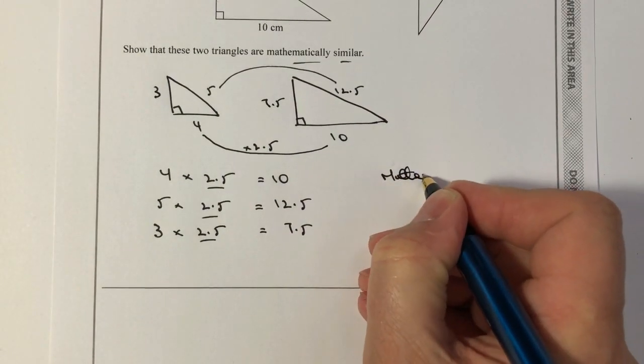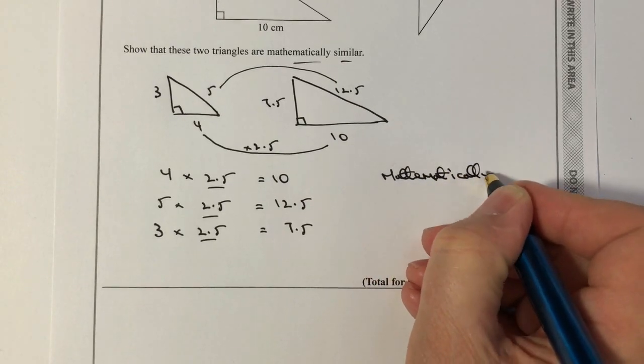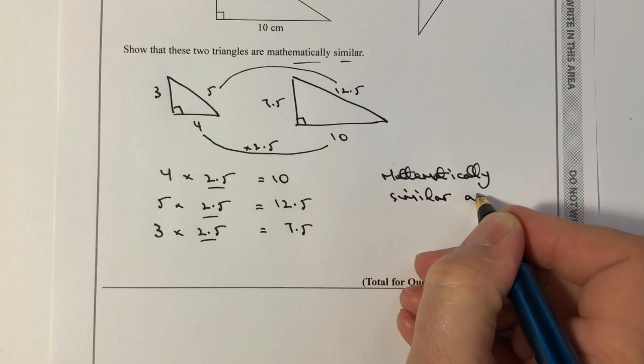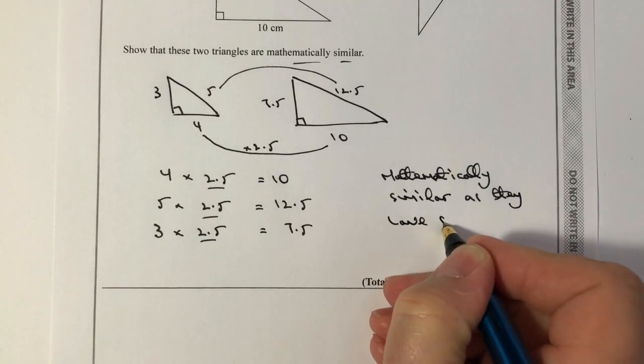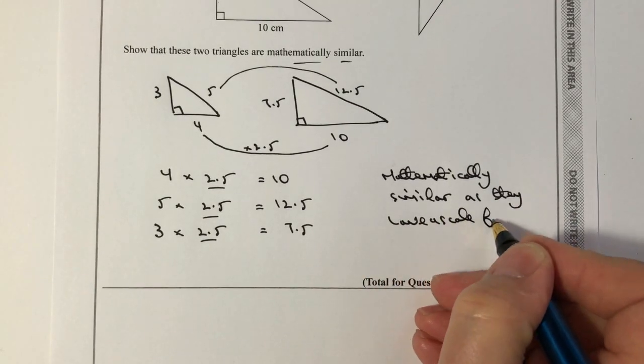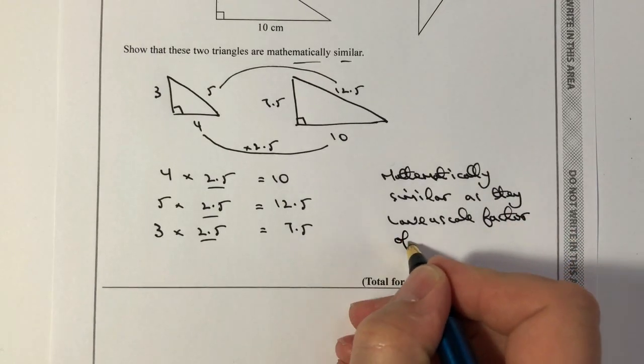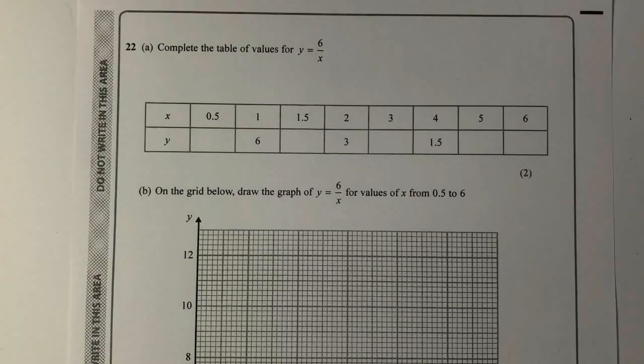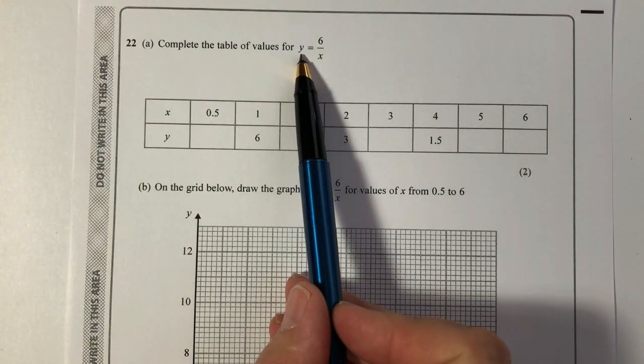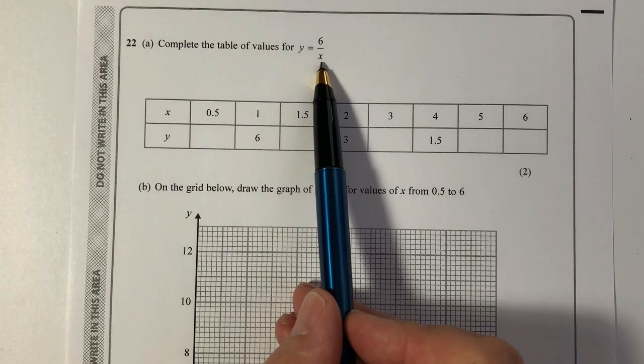So I'll put this in here, mathematically similar, as they have a scale factor of 2.5. Hope that's all right for you. Let's move on then to question number 22, which gives us some information on a table of values and asks us to draw the actual grid and complete the table of values.